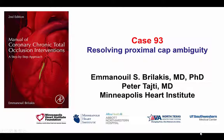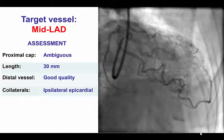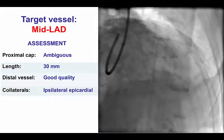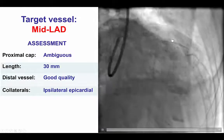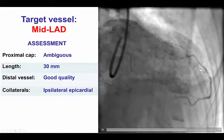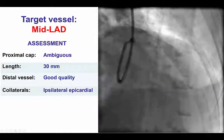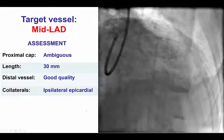This is Manos Brilakis and Peter Taiti from the Minneapolis Heart Institute presenting case 93 for the second edition of the Manual of CTO Interventions. This is a case of proximal cap ambiguity. The patient was referred for CTO-PCI of mid-LAD CTO. The occlusion was at the takeoff of a large diagonal branch and the distal vessel was filling via epicardial collaterals from the circumflex. There was a length of approximately 30 millimeters and the distal vessel appeared to be of good quality.